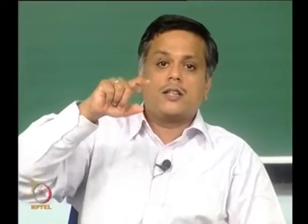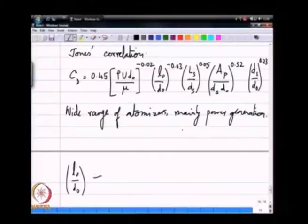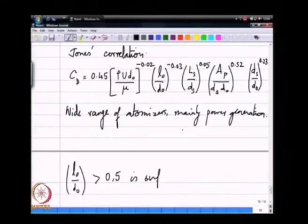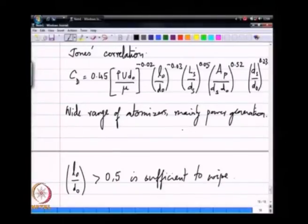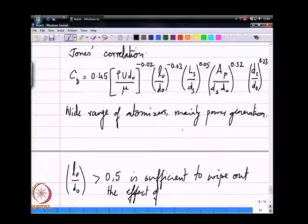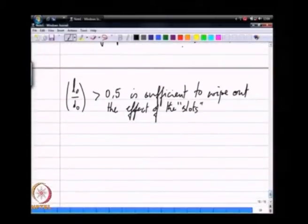I want the length of the orifice to be sufficiently large that memory of these slots is wiped out. Other than that it really does not play much of a role. Just as a rule of thumb anything that is greater than about 0.5 is sufficient to wipe out the effect of the slots.